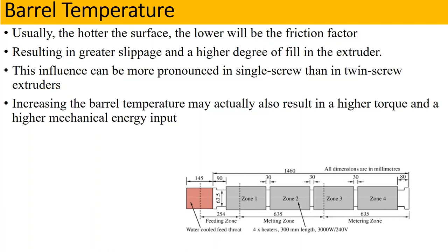This influence can be more pronounced in the single screw than in twin screw extruders. Increasing the barrel temperature may actually also result in higher torque and higher mechanical energy input — just like when your barrel temperature increases, your energy requirements will also be affected.